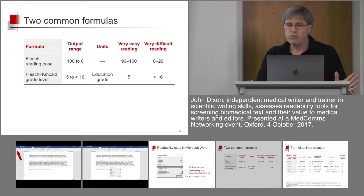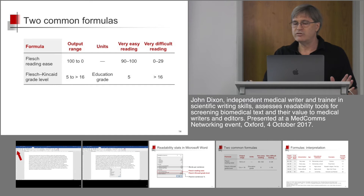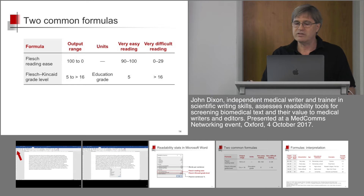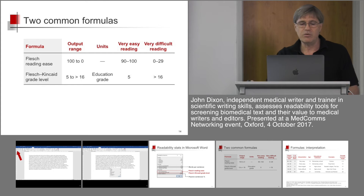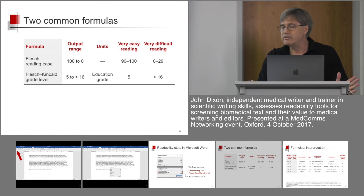So let's consider these two formulas. They give results effectively in opposite directions. The Reading Ease formula gives an output on a piece of text from around 100 down to 0. If it scores text between 90 and 100, that's very easy reading. If it scores text between 0 and 29, that's very difficult reading. The Grade Level works in the opposite direction — Grade 5 would be very easy text, and a Grade of over 16 would be very difficult text.